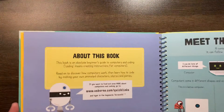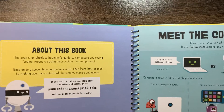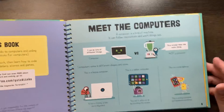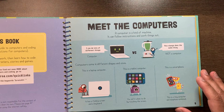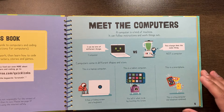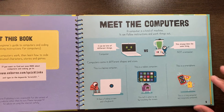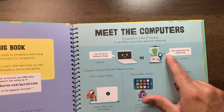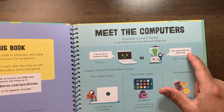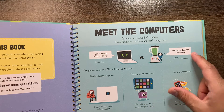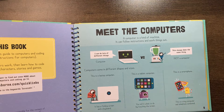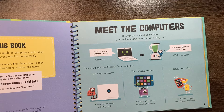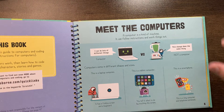What is this book about? This book is an absolute beginner's guide to computers and coding. Coding means creating instructions for computers. A computer is a kind of machine — it can follow instructions and work things out. A blender always does the same thing, so it's not a computer. A laptop, tablet, and iPhone are all different types of computers.